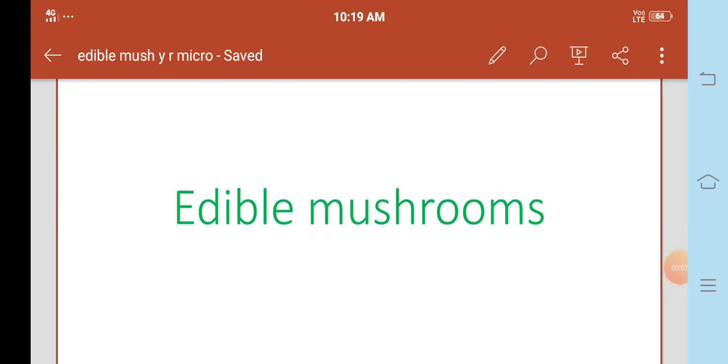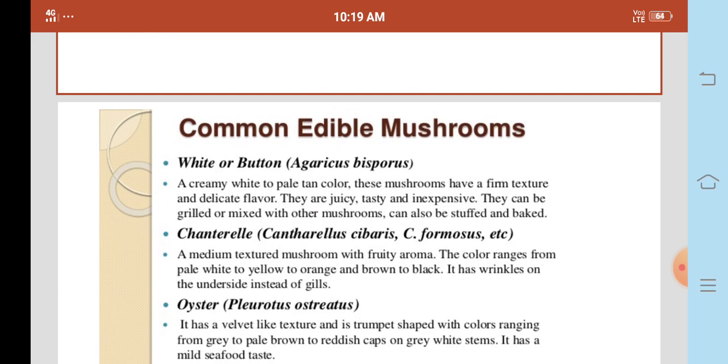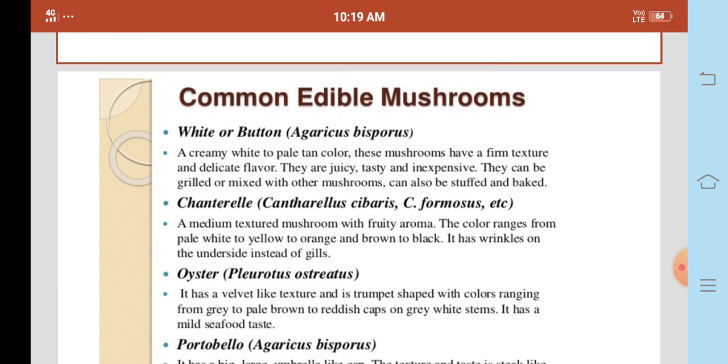Good morning dear family students, today we are going to discuss edible mushrooms. Common edible mushrooms include white or button Agaricus bisporus, a creamy white to pale tan color. These mushrooms have a firm texture and delicate flavor. They are juicy, tasty and inexpensive. They can be grilled or mixed with other mushrooms, and can also be stuffed and baked.